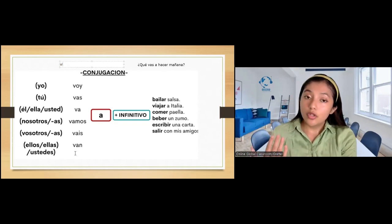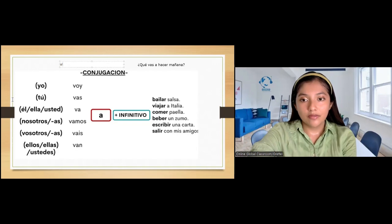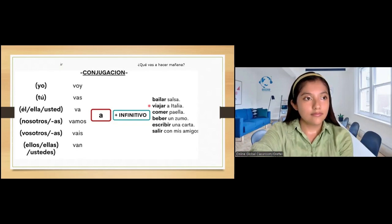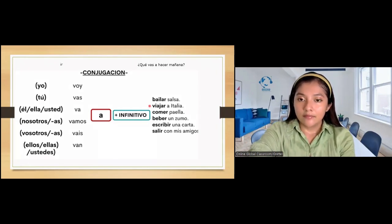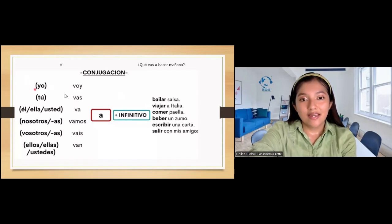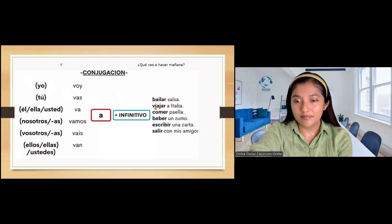Entonces, yo puedo decir algo como... Yo voy a viajar a Italia. ¿Ok? Katy, ¿me puedes decir qué significa? Yo voy a... I didn't hear the last part. A viajar a Italia. In the red point, you can see the last part of the sentence. A viajar a Italia. Can you tell me the meaning, please? Something about Italy. I am going to travel to Italy. A viajar. Travel is viajar.